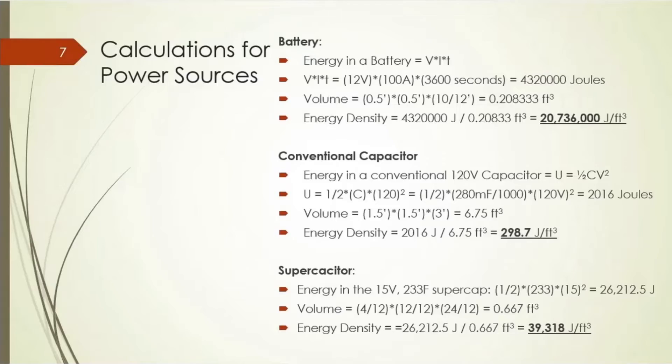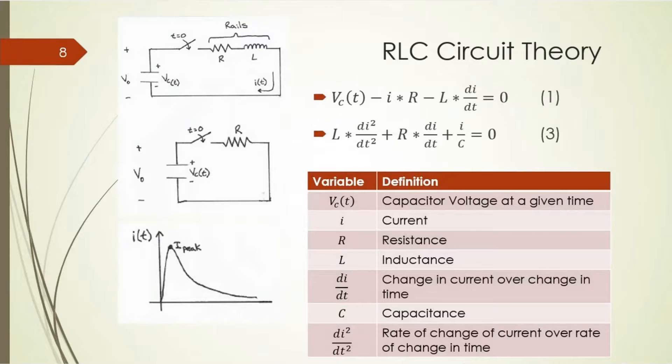I performed some initial calculations to determine which power source would be best. The battery, a 12-volt, 7 ampere-hour battery from Kmart, has approximately 20 million joules per cubic foot. A conventional capacitor, 120 volts, has approximately 300 joules per cubic foot, much less than the battery. And the supercapacitor has about 39,000 joules per cubic foot. So it's the intermediary, and again, the high discharge rate is what I was looking for.